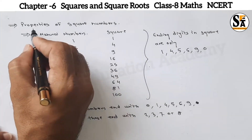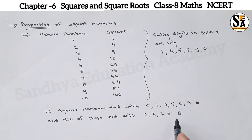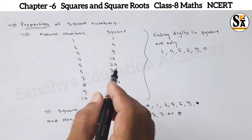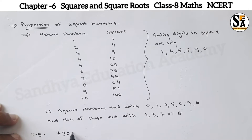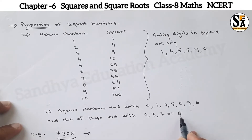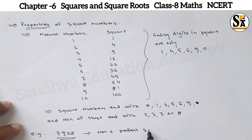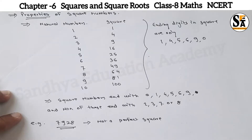This is the property of square numbers — we can at least guess whether a number is a perfect square or not. For example, if the number is 7928, the unit place is 8, and since no perfect square ends with 8, it is not a perfect square. Similarly, if the number is 1057, the unit place is 7, so it is also not a perfect square.